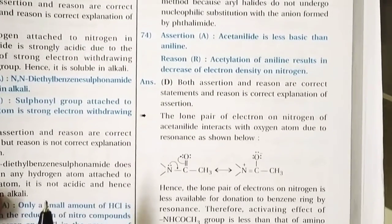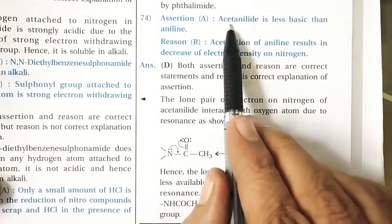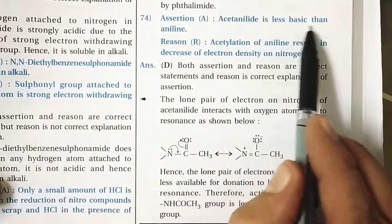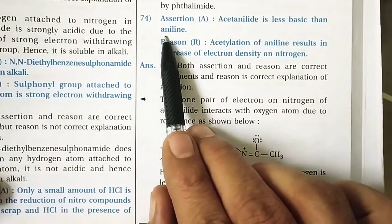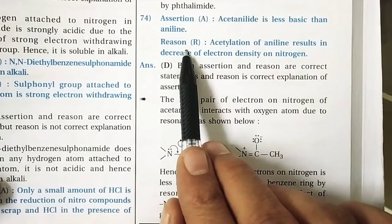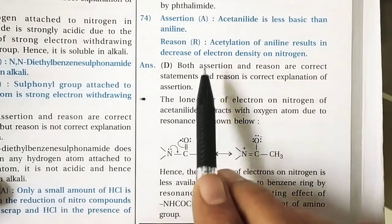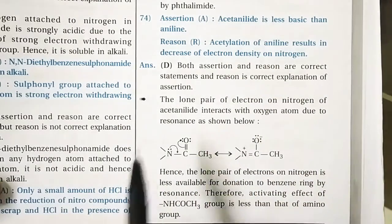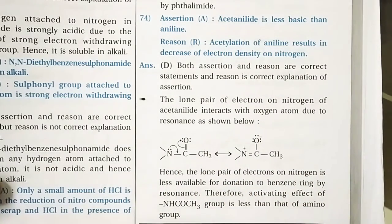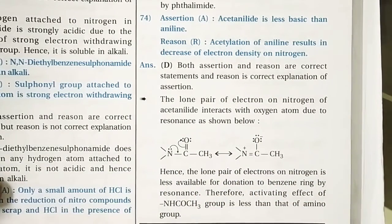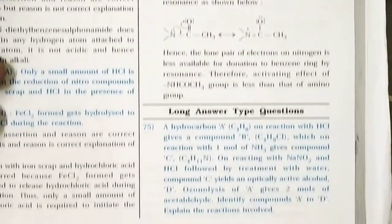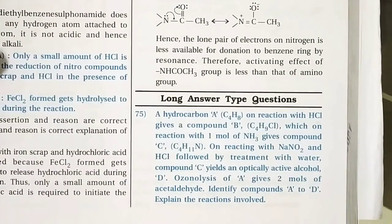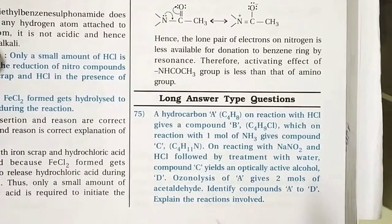Question 74: Assertion — acetanilide is less basic than aniline. This is correct. Acetylation of aniline decreases its basicity, and the correct explanation is also provided. Both the assertion and the correct explanation are valid.